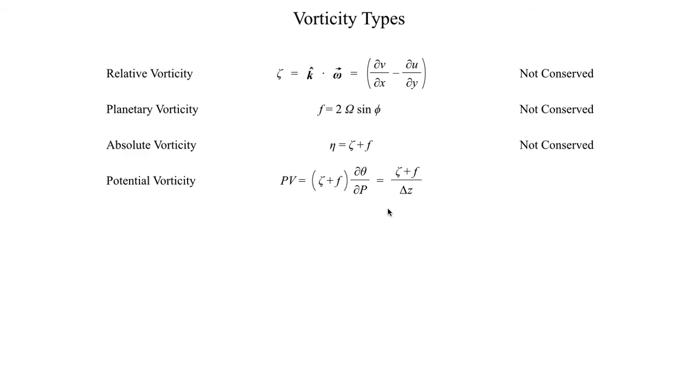In fact, there are quite a few different formulations for potential vorticity, but the two simplest ones are the ones shown on the screen here. This total vorticity times dθ, which is theta is potential temperature, dp, which is pressure, and then also eta, the absolute vorticity, divided by the depth of the column in question.